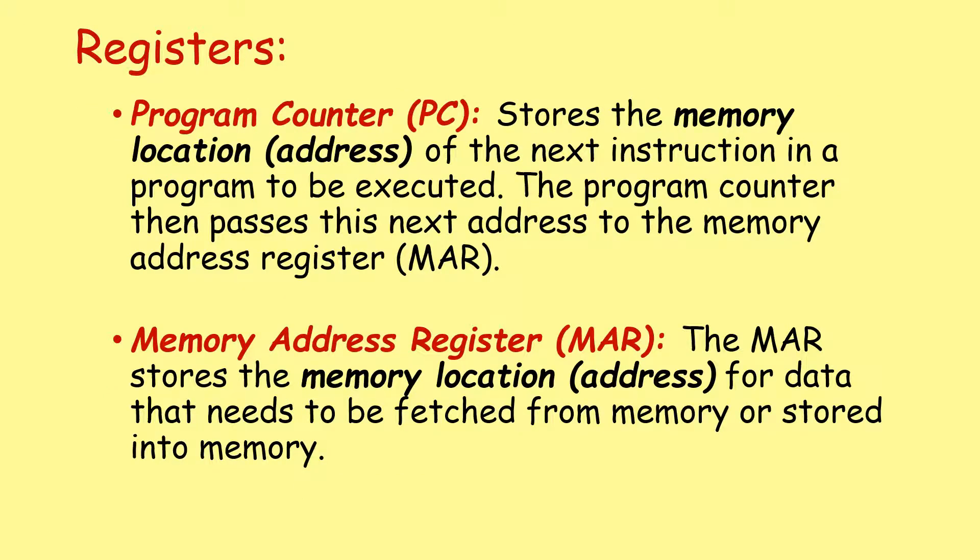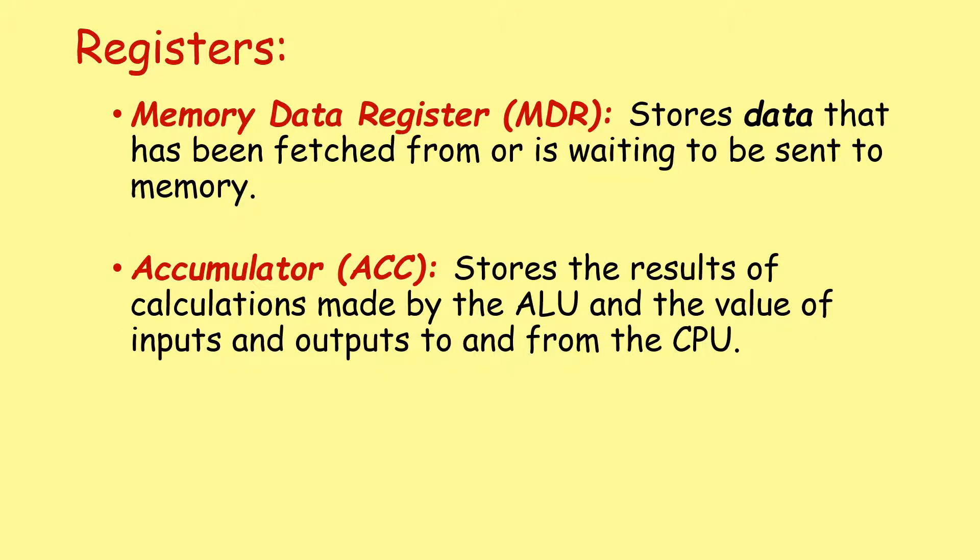So let's take a closer look at those specialist registers. The first is the program counter, PC. This stores the memory location or the address of the next instruction in a program to be executed. The program counter then passes this next address to the memory address register, the MAR. The memory address register stores the memory location or the address for data that needs to be fetched from memory or is going to be stored into memory. The memory data register, the MDR, stores data that has been fetched from or is waiting to be sent to memory. And finally, we have the accumulator. This stores the results of calculations made by the ALU and the value of inputs and outputs to and from the CPU.